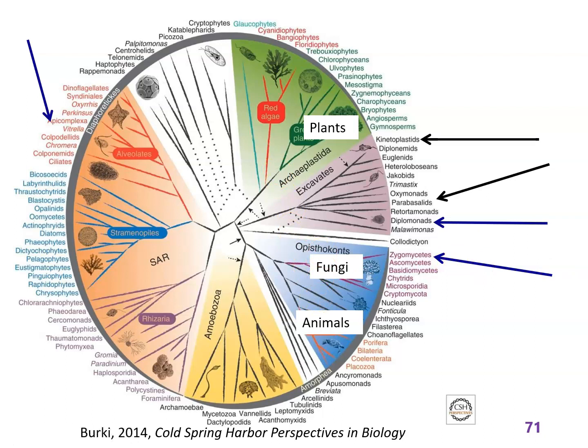I don't expect you to memorize this — I just want you to see that the phylogeny is different depending on how you measure it. But also, a lot of the protists we're going to look at are from this group. If you go back to look at this after you've looked at the protist pathogens, you'll see a lot of them come from this group. And the one that causes malaria is over here.